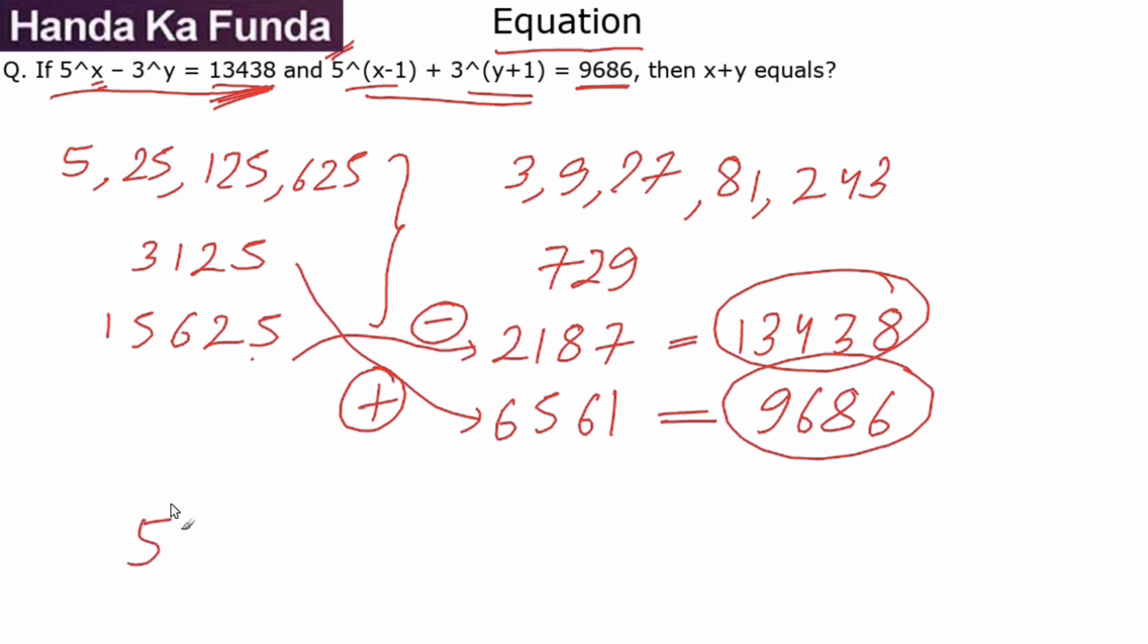Now 5 to the power of x—this is 5 to the power of 1, 2, 3, 4, 5, 6—so this is 5 to the power 6, minus 3 to the power of 1, 2, 3, 4, 5, 6, 7. Minus 3 to the power 7 is 13438. I have the value of x as 6, the value of y as 7. I'm supposed to find the value of x plus y, or 6 plus 7, which comes out as 13, and that will be my answer.